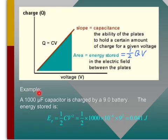And for this example here, you just use this formula: one-half CV squared. C is the charge which is that, V is the voltage which is that, you get the answer 0.041 joules.